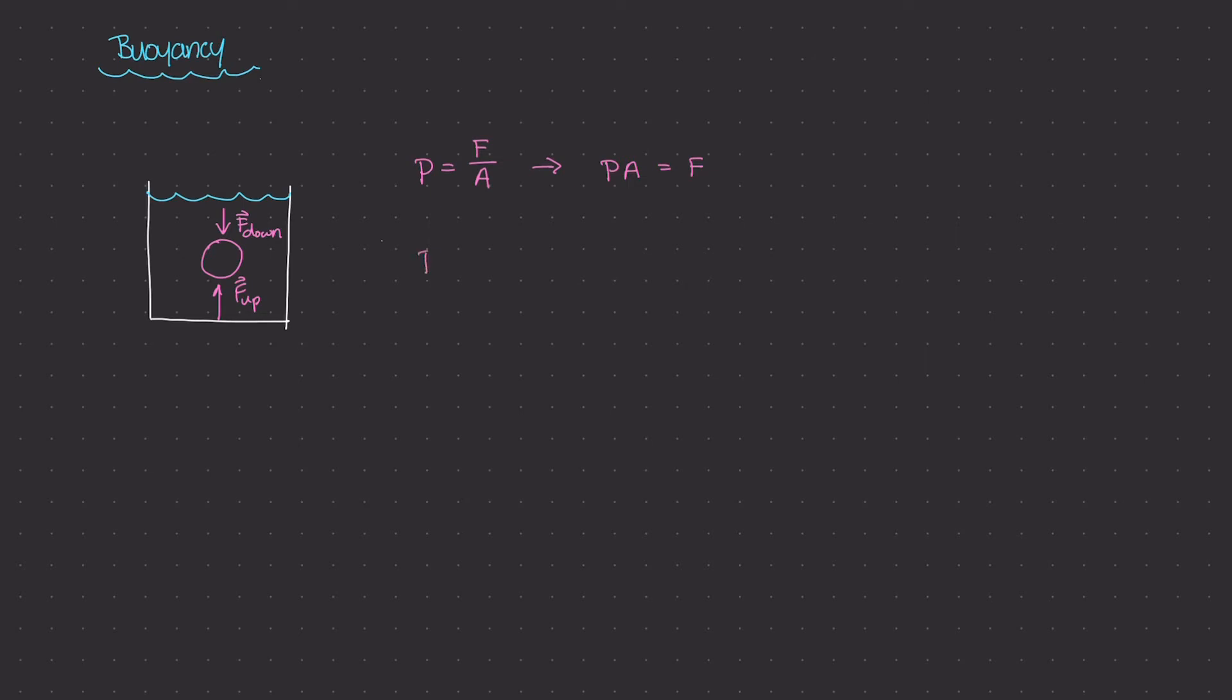In this case, we know that force up, which is the force at the bottom of the object exerted by the fluid is going to be larger than the force down. And you can kind of tell from this diagram that this net resulting force, this net F net is going to be acting up.